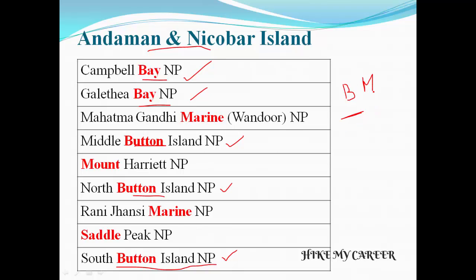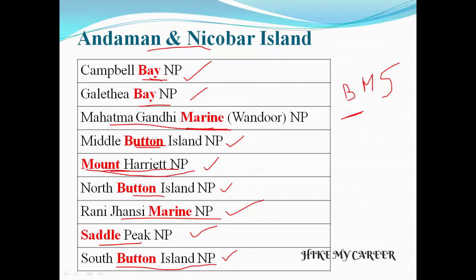M means Marine and Mount. Parks are Mahatma Gandhi Marine National Park and Rani Jhansi Marine National Park. Then Mount — Mount Harriet National Park. And S means Saddle — Saddle Peak National Park. So BMS: B means Bay/Button, M means Mount/Marine, and S means Saddle.